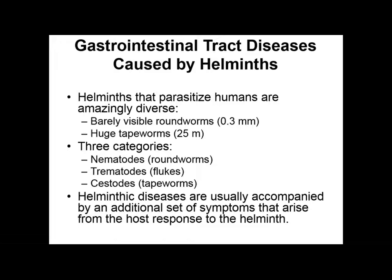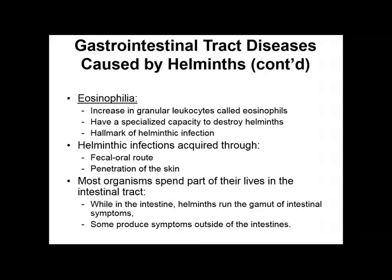One of those symptoms is eosinophilia — we're going to have a lot of eosinophils. Eosinophils are a granular leukocyte specialized for destroying helminths. They are the white blood cell that specializes in destroying parasitic worms in our bodies. Having an elevated eosinophil count in the blood is the hallmark of a helminthic infection. Helminths are typically transmitted through the fecal-oral route, though occasionally they'll penetrate the skin.